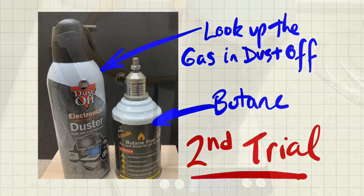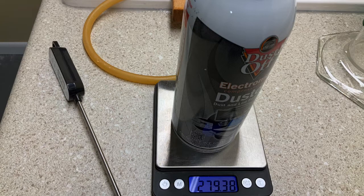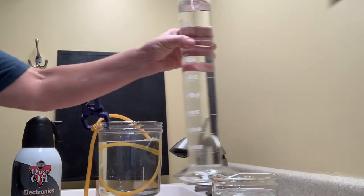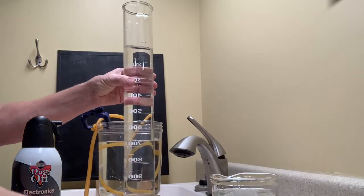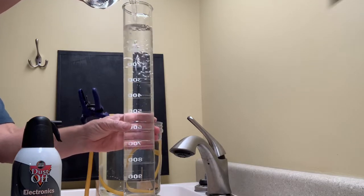Here comes the gas canister. A quick google search will let you know what gas is most likely in a dust off canister. This time we'll collect quite a bit more gas. So I'm going to use a 1,000 mil graduated cylinder.